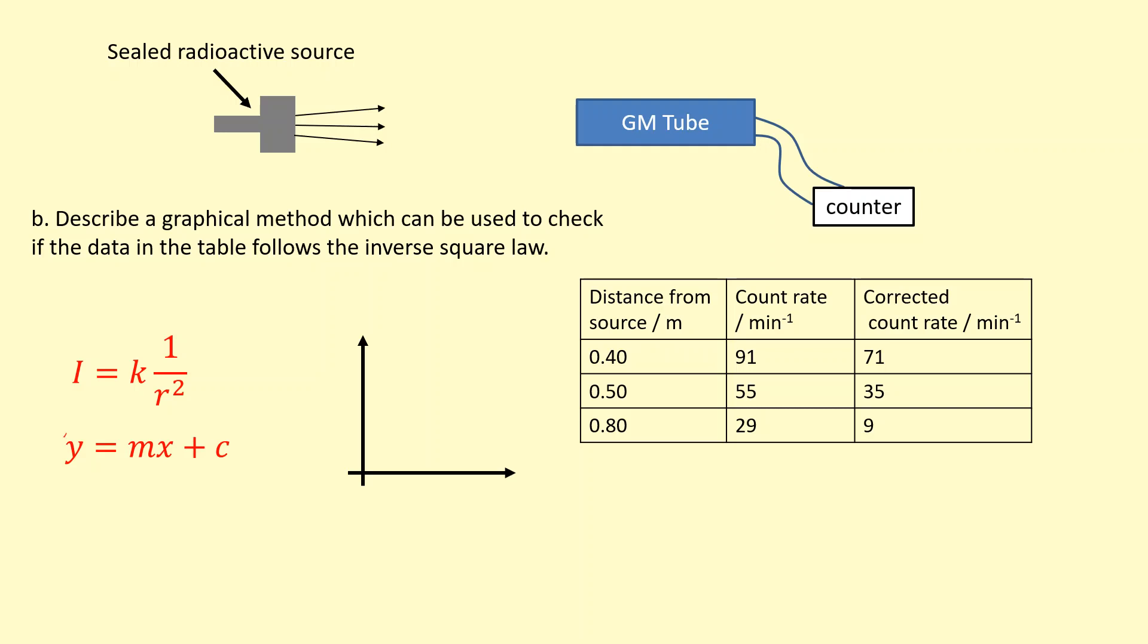So on my y-axis, I can plot intensity. On my x-axis, I should plot 1 over the distance squared. This means the thing that's multiplying the 1 over the distance squared, k, is going to be my gradient. And there shouldn't be any y-intercept because there's nothing being added there on the inverse square law. I'm going to need a new column for 1 over distance squared, I'm going to write those numbers down like that. When I plot the graph, I should get a straight line that's going through the origin. Now, if I don't get a straight line going through the origin, that means the data does not follow the inverse square law.